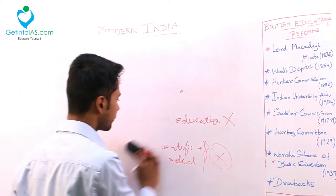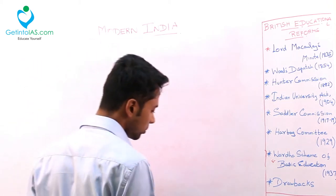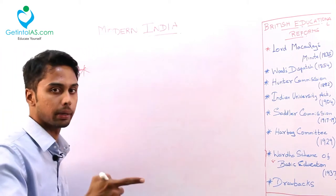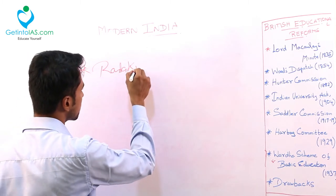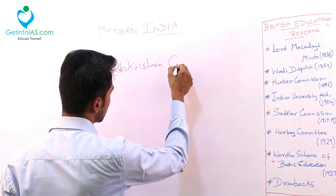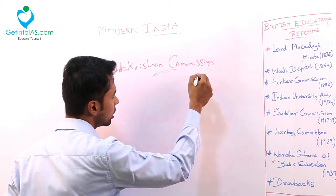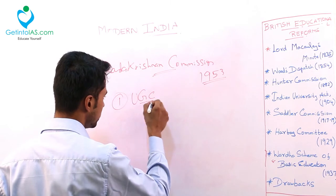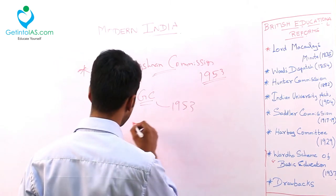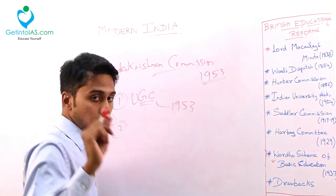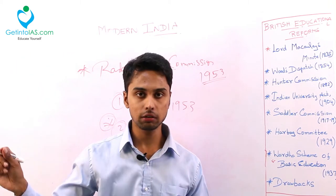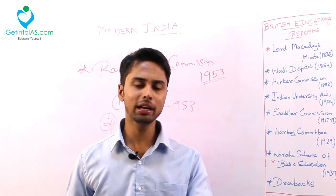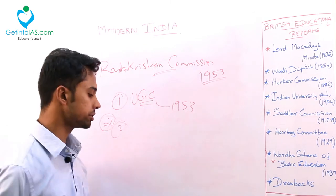Now we look at the education reforms after independence. First came the Radhakrishnan Commission during the year 1953. University Grants Commission - UGC - was set up in the year 1953 by this commission. Also, this commission gave a mandate that a university degree should not be made absolutely essential for entering into the administration levels. These are the recommendations given by the Radhakrishnan Commission in the year 1953.